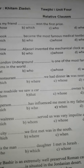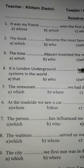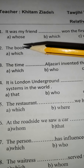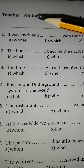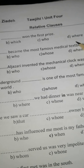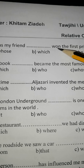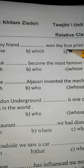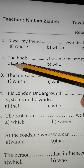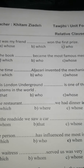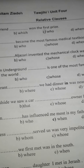Now let's look at this worksheet. نطلع على ورقة العمل — extra exercises. It was my friend who won the first prize. لما تشوفي my friend — شخص، فأكيد who. The book — أكيد بدك which. The time — على طول بدها when.